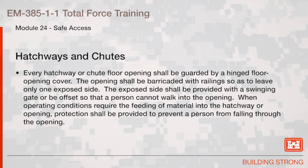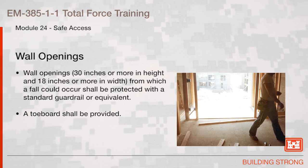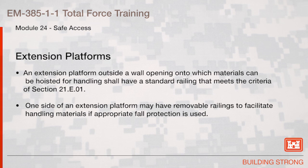Hatchways and chutes: Every hatchway or chute floor opening shall be guarded by a hinged floor opening cover. The opening shall be barricaded with railings so as to leave only one exposed side. The exposed side shall be provided with a swinging gate or offset so that a person cannot walk into the opening. When operating conditions require feeding of material into the hatchway, protection shall be provided to prevent a person from falling through. Wall openings 30 inches or more in height and 18 inches or more in width from which a fall could occur shall be protected with a standard guardrail or equivalent, and a toe board shall be provided. Extension platforms outside a wall opening shall have a standard railing meeting the criteria of Section 21.E.01.